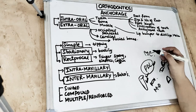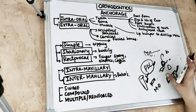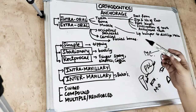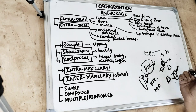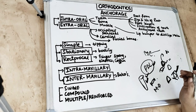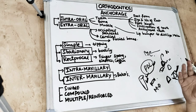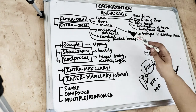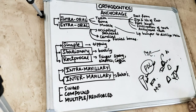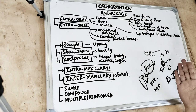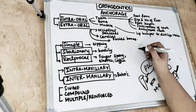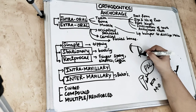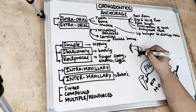Muscles are also a source of anchorage. Hypotonic muscles cause flaring or spacing of teeth, while hypertonic muscles exert restrictive forces in the lingual direction. For example, with a lip bumper, we take support from the hyperactivity of the mentalis muscle to do distalization of the molar, although this movement is relatively small. For extraoral anchorage, we have occipital or parietal anchorage taken from the cranium, using headgears along with face bows, either from the occipital or parietal area of the skull, which restricts maxillary growth or moves the maxilla distally.